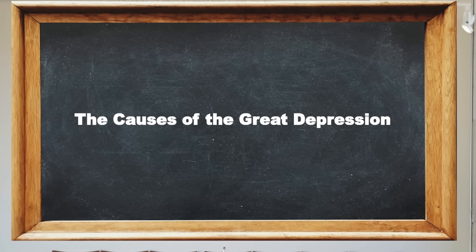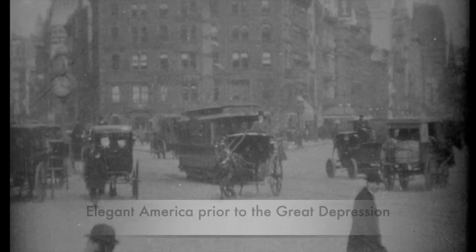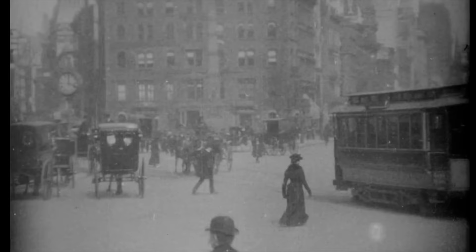The causes of the Great Depression. What was the Great Depression? The Great Depression was a global economic upheaval from 1929 to 1940. It was manifest by a sharp decline in business activity, high unemployment, and deflation.